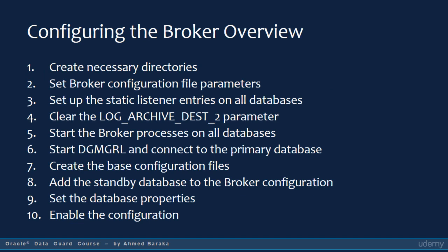We have talked about how the broker makes managing a Data Guard configuration easier. The procedure to configure the broker is: (1) create the necessary directories for broker configuration files; (2) set the broker configuration file parameters; (3) set up static listener entries in all databases; (4) clear the log archive destination parameter; (5) start the broker processes in all databases; (6) start DGMGRL and connect to the primary; (7) create the base configuration; (8) add standby databases; (9) set database properties; and finally enable the configuration.